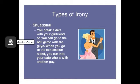Situational irony occurs when the exact opposite of what is meant to happen happens, such as in this example: when you break a date with your girlfriend so you can go to the ball game with the guys, but when you go to the concession stand, you run into your date who is with another guy.